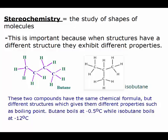Stereochemistry is the study of shapes of molecules. This is important because different structures exhibit different properties, such as butane and isobutane. Both have the chemical formula C₄H₁₀, with 4 carbons and 10 hydrogens, but their structure differs. Butane has a chain of 4, while isobutane has a chain of 3 with one branching off. Because of that small difference, butane boils at -5.5°C while isobutane boils at -12°C. Knowing how molecules are shaped and how they interact is very important.